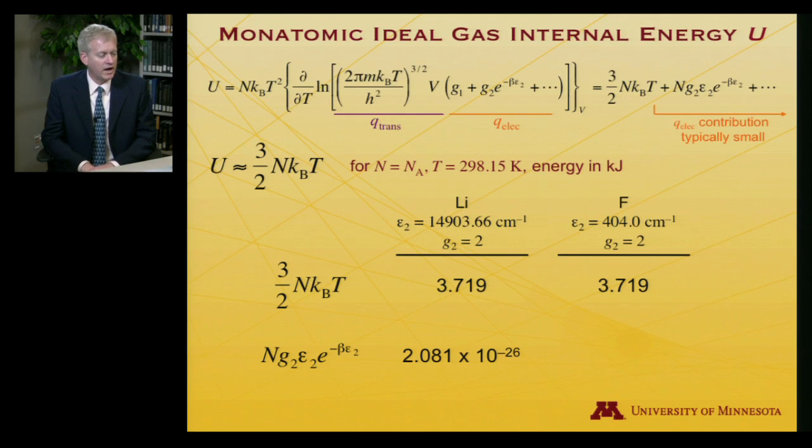Those constants don't change for fluorine. There's no difference between the two atoms when it comes to the first term associated with translation. However, if we plug in this excited state energy, putting in Avogadro's number and two for degeneracy, we discover that lithium's contribution to the total internal energy is 2.081 times 10^-26 kilojoules—about 27 orders of magnitude smaller than three halves NkT, so negligible.